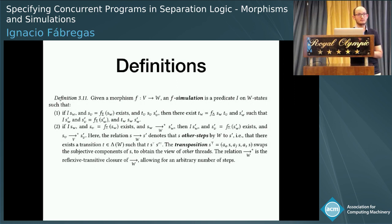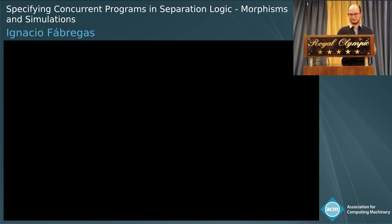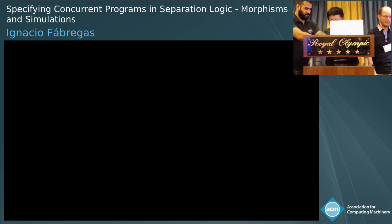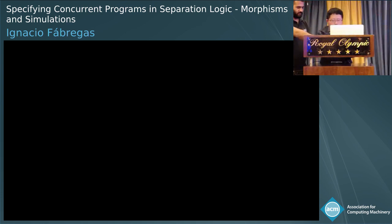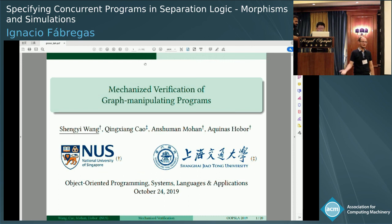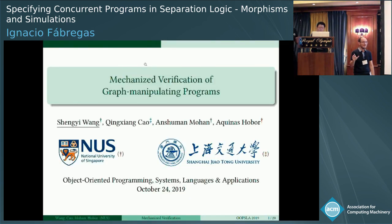Another audience member notes it's very good work and asks whether there are examples that don't start with a lock. The speaker responds that they started with a lock because it was the easiest example to present in the paper, but they also have the quiescence example, which is completely different. Most examples in the paper are with locking, but the quiescence example has nothing to do with locks.